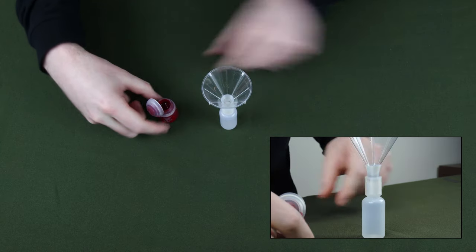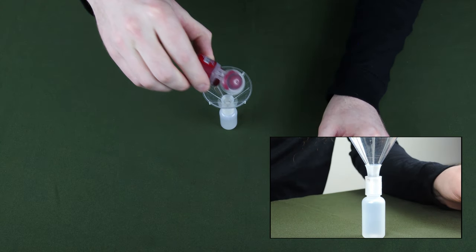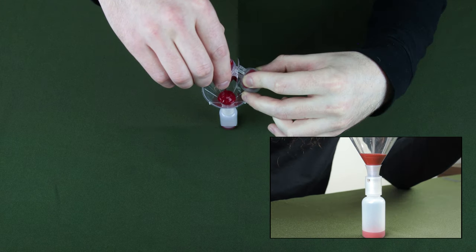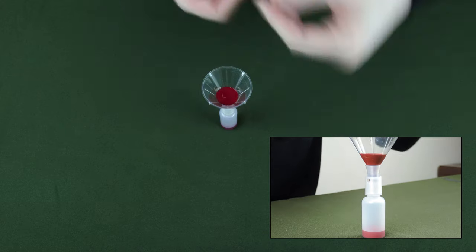Then, simply pour your paint pot into the funnel. While you're waiting for the paint to move through the funnel, grab your paint thinning medium.